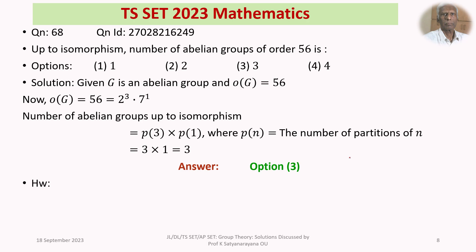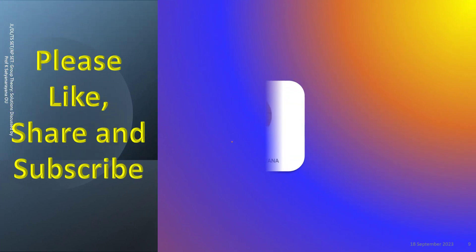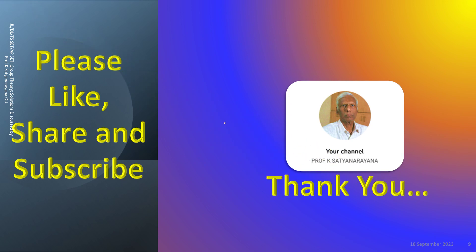Here is a homework problem: the number of non-isomorphic abelian groups of order 1800 is — please write your answer in the comments box. That concludes our discussion of the partition of a positive integer, the number of partitions, and the related theorems for counting non-isomorphic abelian groups. I wish you all the best. Thank you.